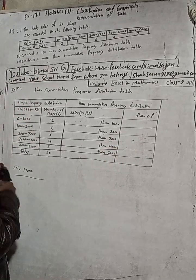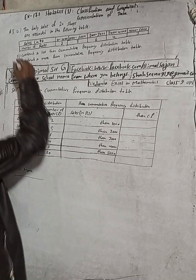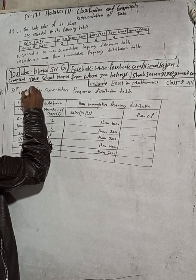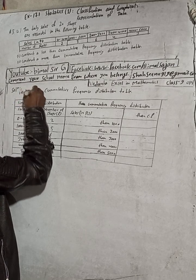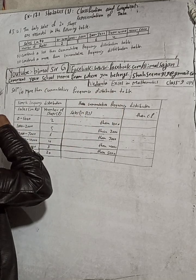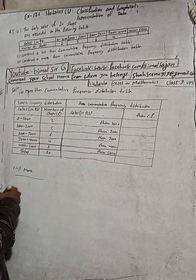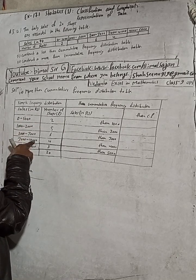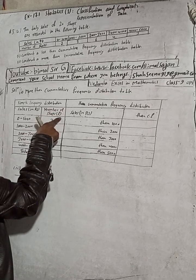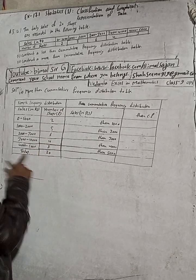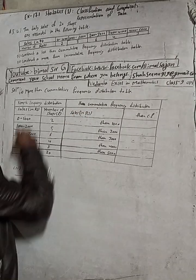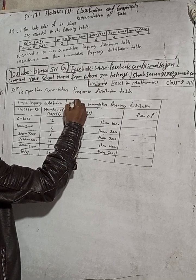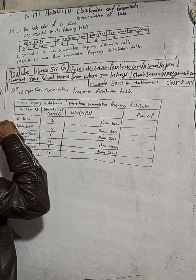Now on this side, same data. Here we have to construct the more than cumulative frequency distribution table. The simple frequency distribution is the same — sales in rupees: 0 to 1000, 1000 to 2000, 2000 to 3000, 3000 to 4000, 4000 to 5000, with frequencies 2, 5, 6, 4, 3. Now we will write here: more than cumulative frequency distribution table.